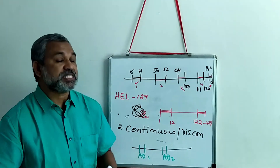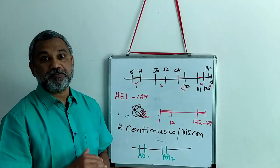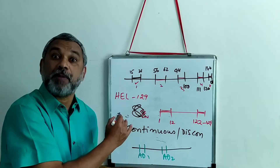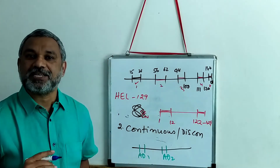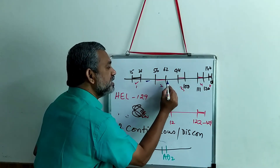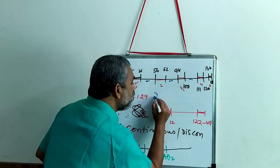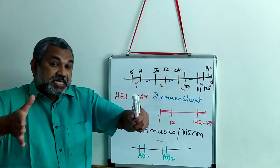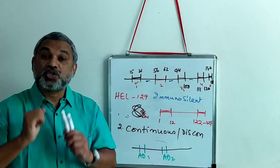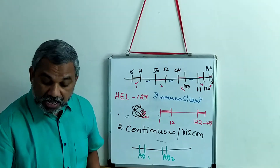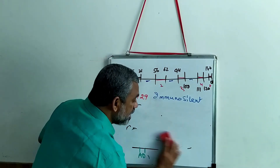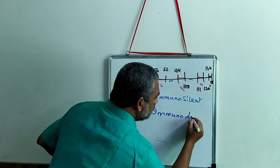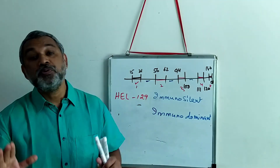We have seen continuous and discontinuous antigenic determinants. A third characteristic of antigenic determinants is that they are separated by immunosilent regions — the blue regions in myoglobin — which are immunosilent. Another characteristic is that certain antigenic determinants are highly potent; we say that they are immunodominant. Certain antigenic determinants are immunodominant.